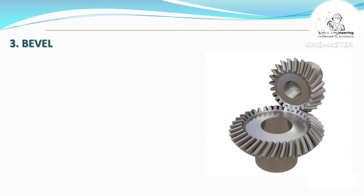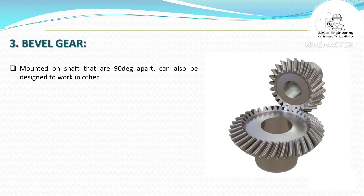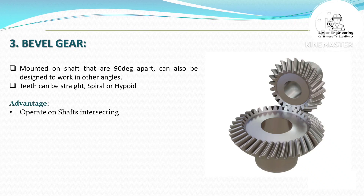Bevel Gear — mounted on shafts that are 90 degrees apart, but can also be designed to work at other angles. Teeth can be straight, spiral, or hypoid.